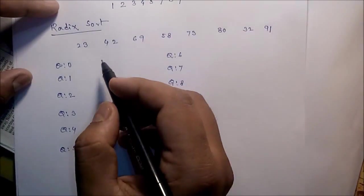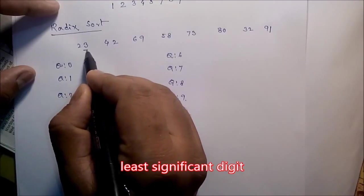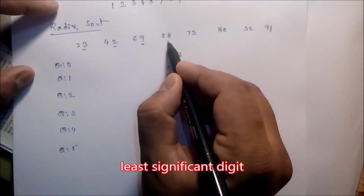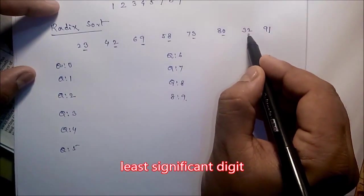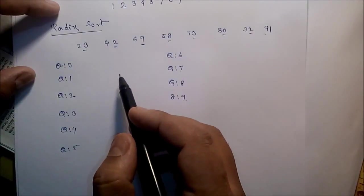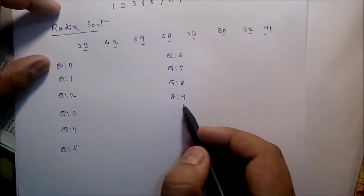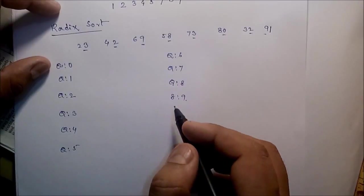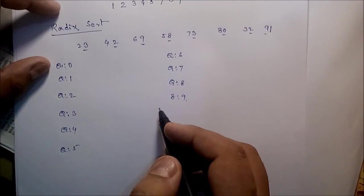Now, the Radix Sort algorithm. In Radix Sort, first see the least significant bits. These are the least significant bits. Now, there are 10 queues here. Queue data structure, as you already know, follows first in first out strategy.